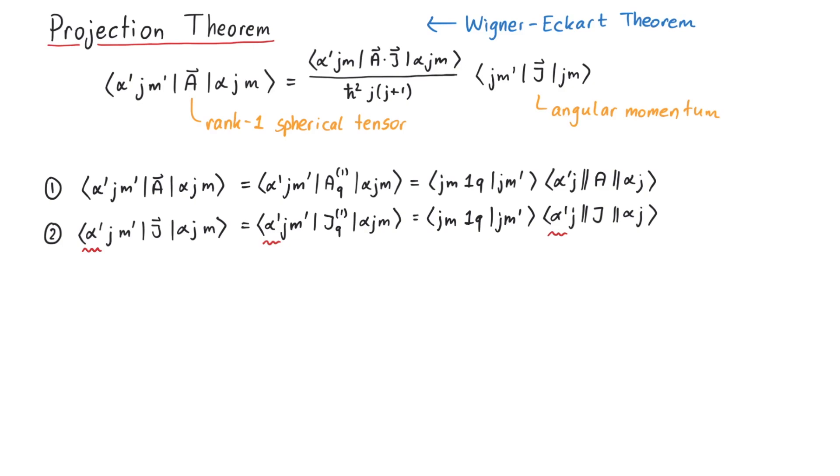Note that we can take alpha to be equal to alpha prime in the second line, and the Clebsch-Gordan coefficient is the same. This is important because we use the fact that the Clebsch-Gordan coefficients are the same in order to substitute one equation into the other. This gives us the matrix element of A in terms of the ratio of two reduced matrix elements times the matrix element of angular momentum.